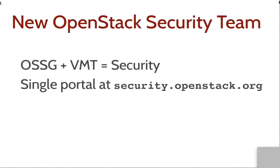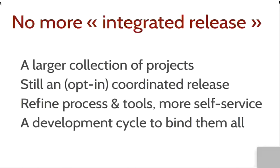The second change is that we no longer have an integrated release per se. We no longer have this closed set of projects that make up the OpenStack product release every six months. We have a larger collection of projects that are all OpenStack projects. They still release at the end of a six-month development cycle. There will still be an OpenStack release at the end of the Liberty cycle that we are currently in, but it's more an opt-in release — projects can be part of this coordinated release at the end of the cycle. It's no longer a closed set that excludes most projects from appearing inside the project deliverables.